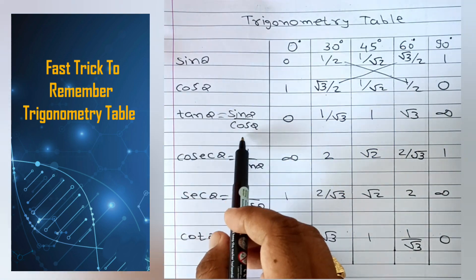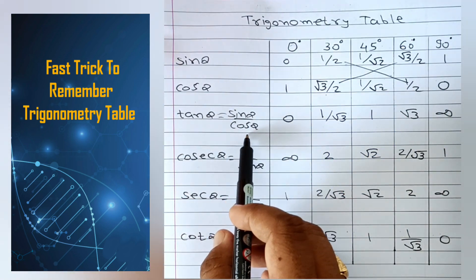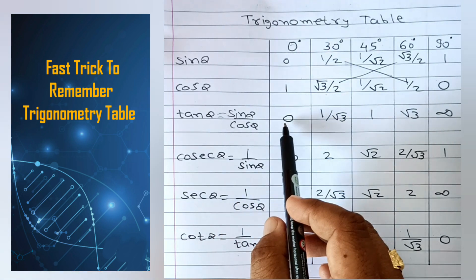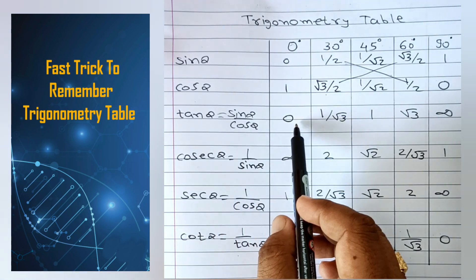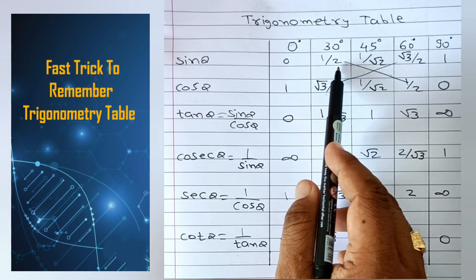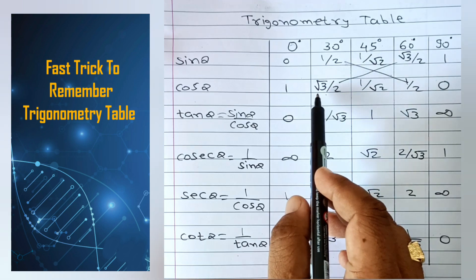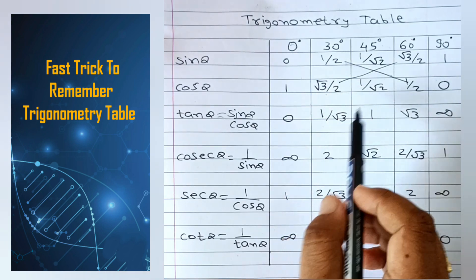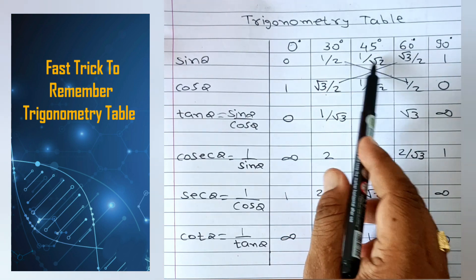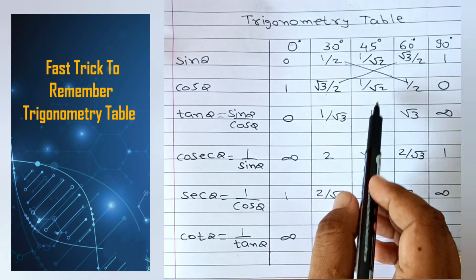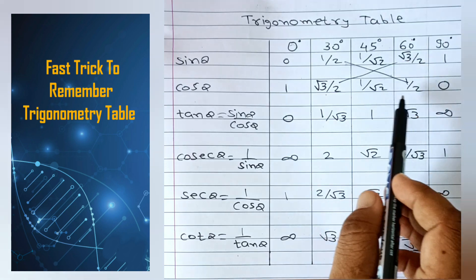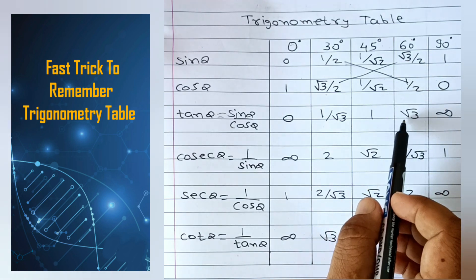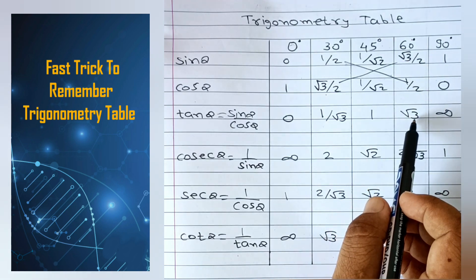Tan theta equals sin theta divided by cos theta. So here: 0 divided by 1 is 0; 1/2 divided by root 3 by 2 is 1 upon root 3; 1 upon root 2 divided by 1 upon root 2 is 1; root 3 by 2 divided by 1/2 is root 3; and 1 divided by 0 is infinity.